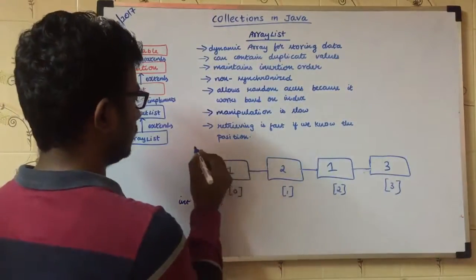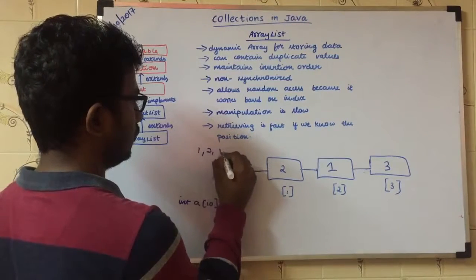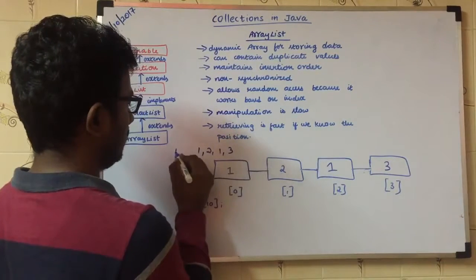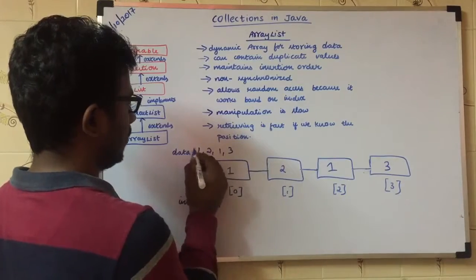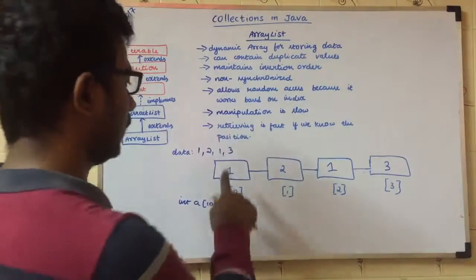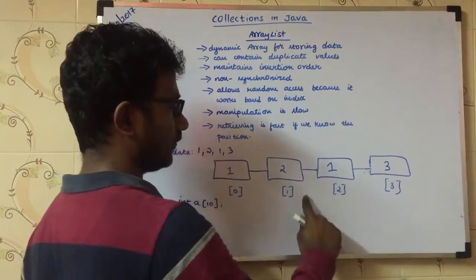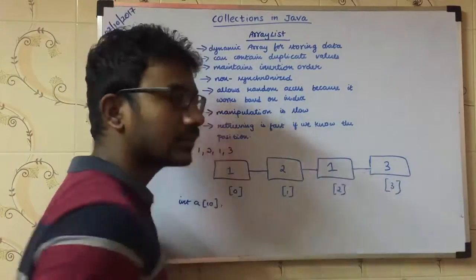If you insert 1, 2, 1, 3 as data, it adjusts. 1 is first at 0th index, 2 is at first index, 1 is at second index, 3 is at third index.